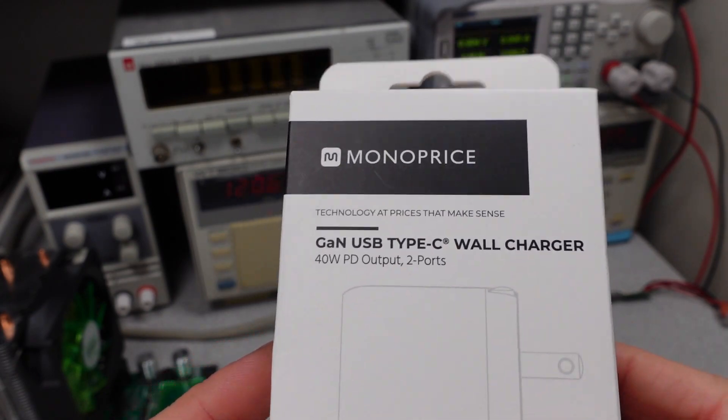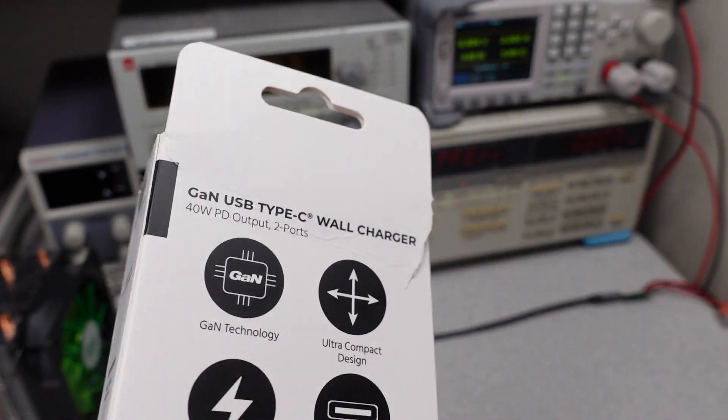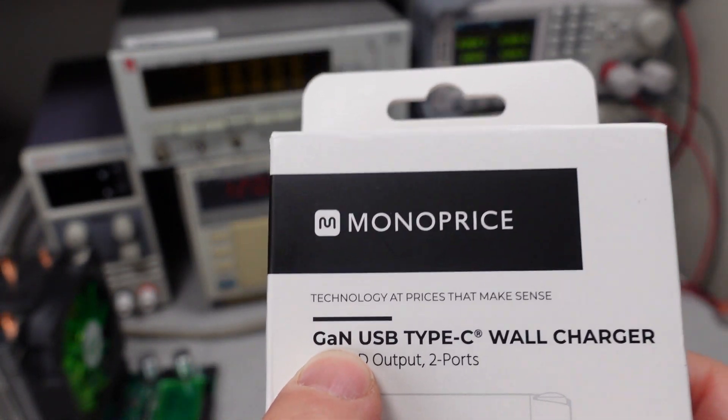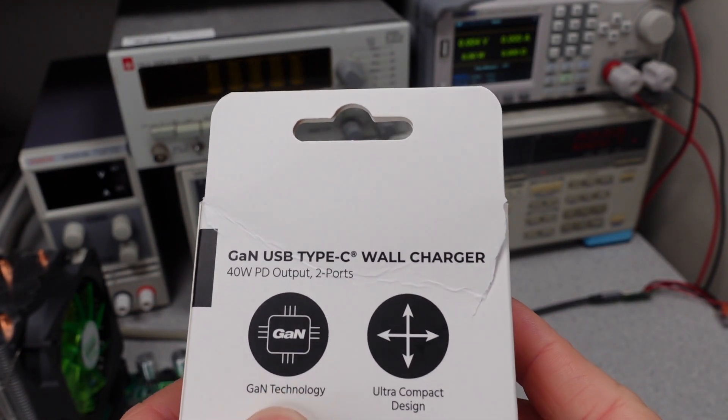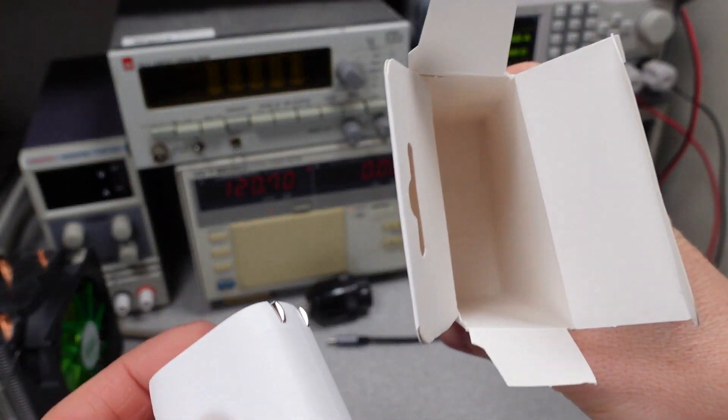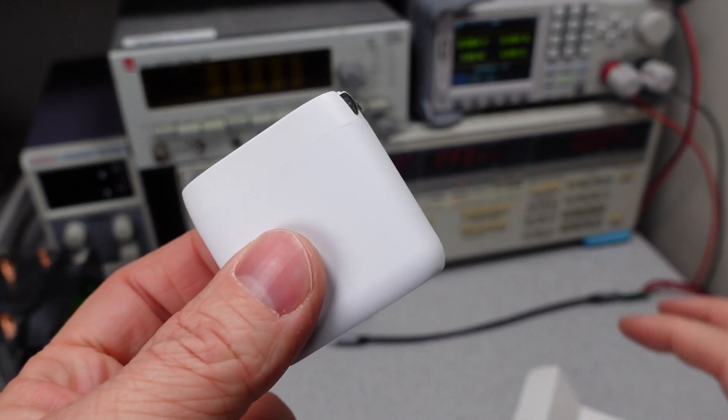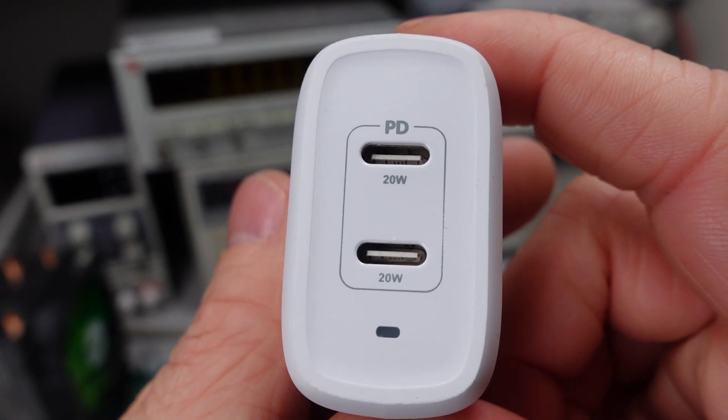So this being a dual-port device, we're going to see some things that are just a little bit different. So let's get it open. First thing we notice is this GAN on here, GAN technology. Nothing else in the box, just a power adapter. So there we can see what we got. We got PD, 20-watt, 20-watt, and a little LED.